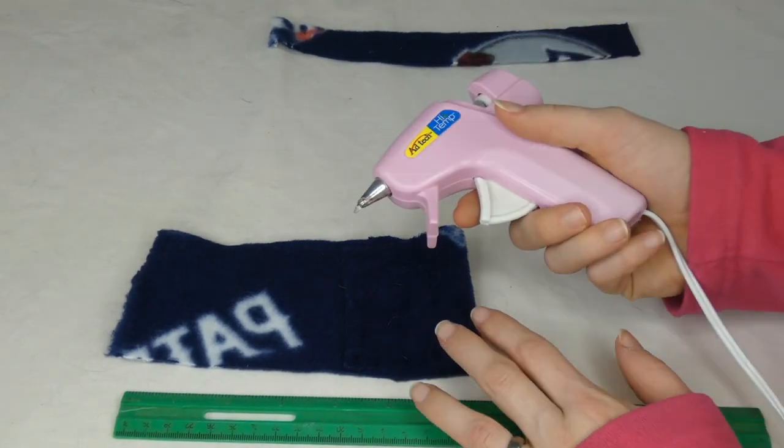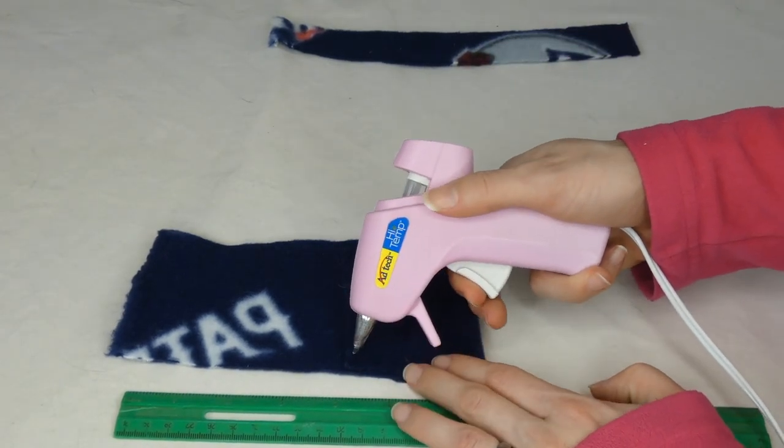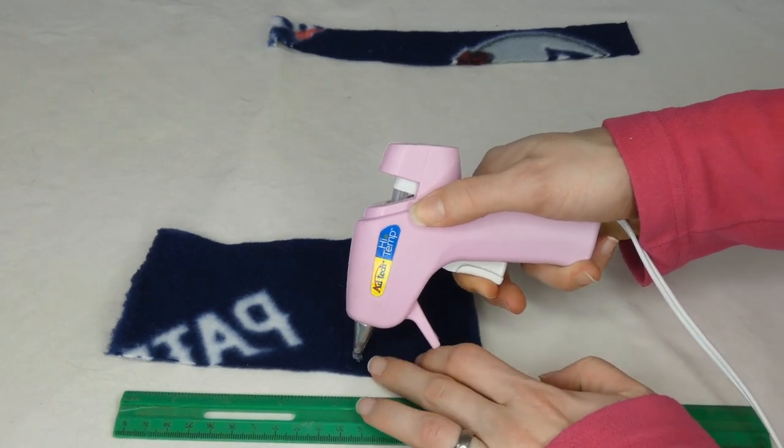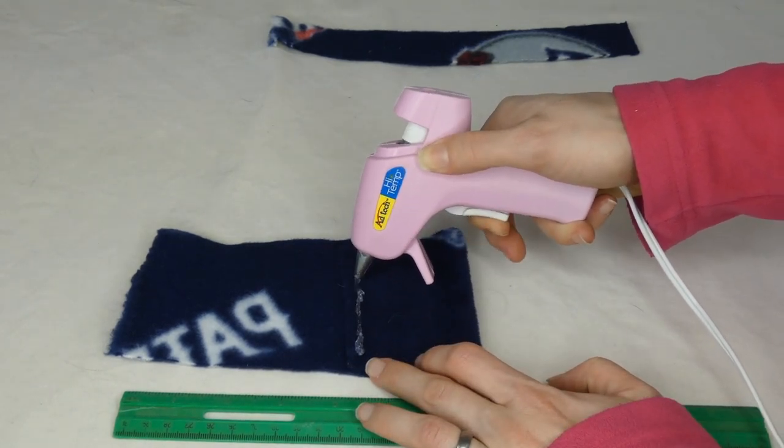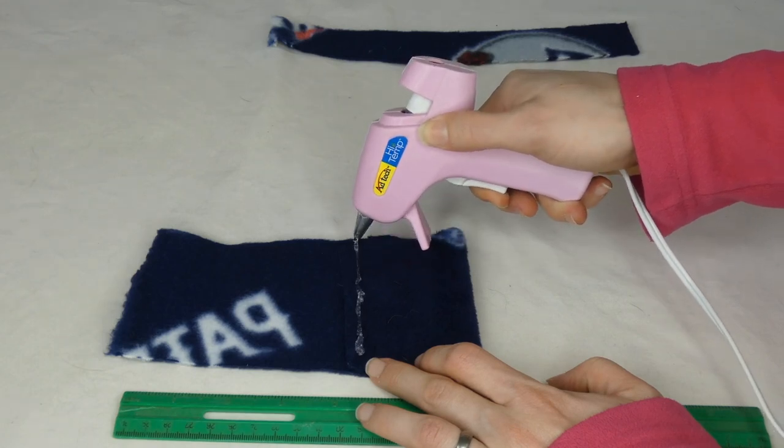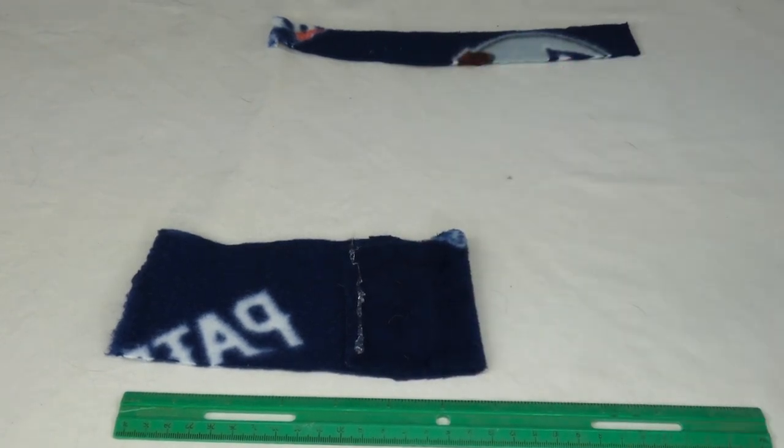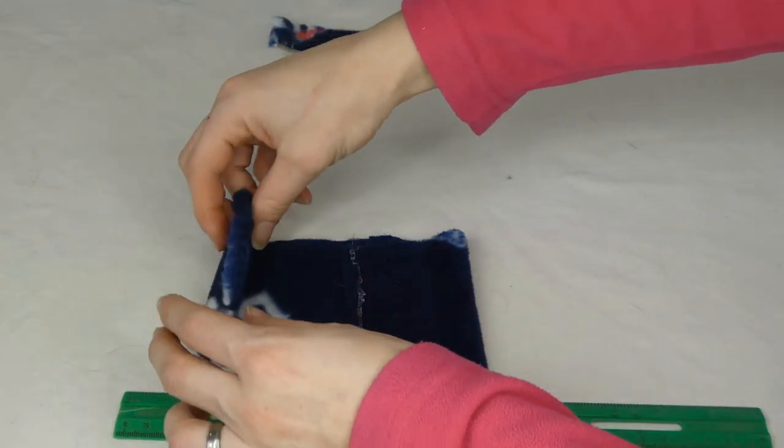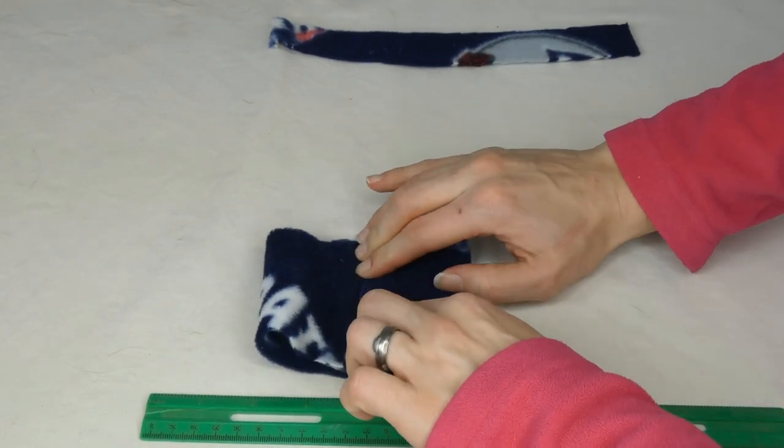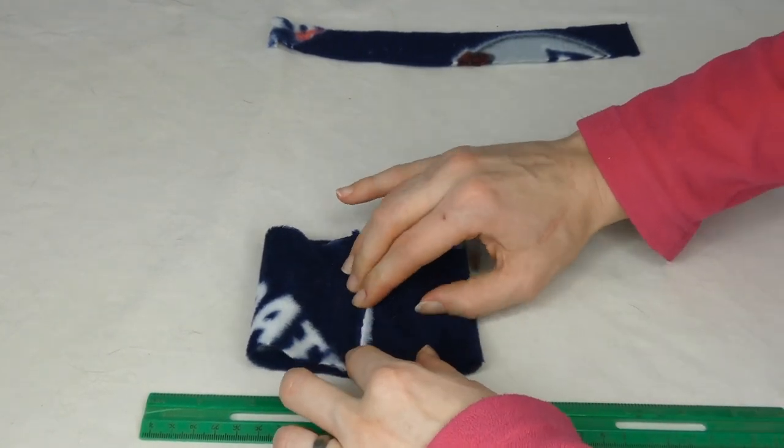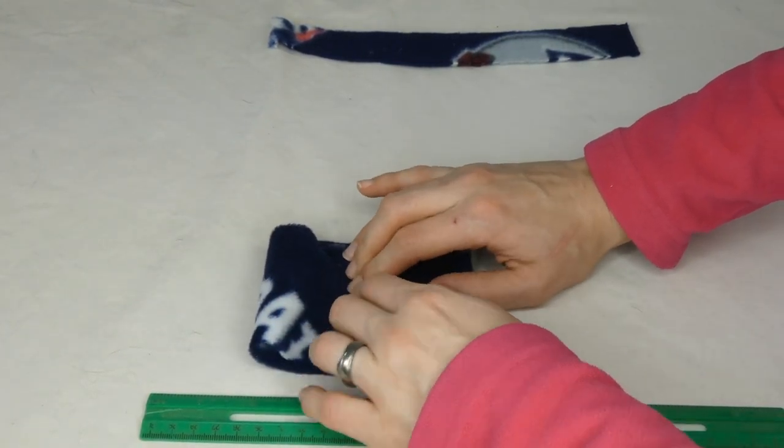Because it is a no-sew bowtie, I'm going to use hot glue. So I'm going to just put a little line of hot glue here. I'm running out of glue, so I'm going to stick another stick in there, and I'm going to fold this over and just press it together and let it dry.